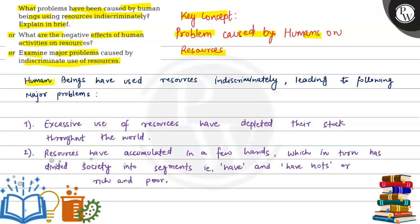Human beings have used resources indiscriminately, leading to following major problems. So the first problem is excessive use of resources have depleted their stock throughout the world. As more resources are extracted and used, their quantity and stock keep decreasing. And the second point is...